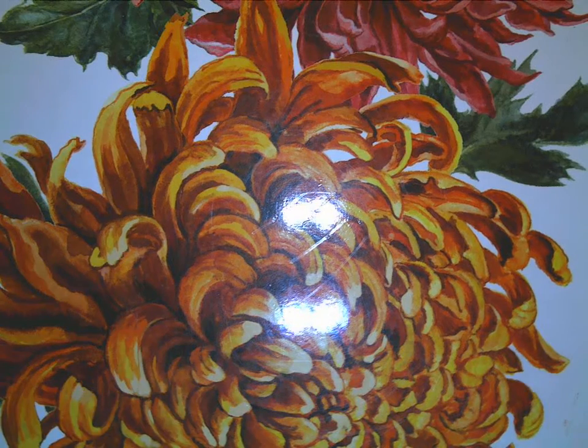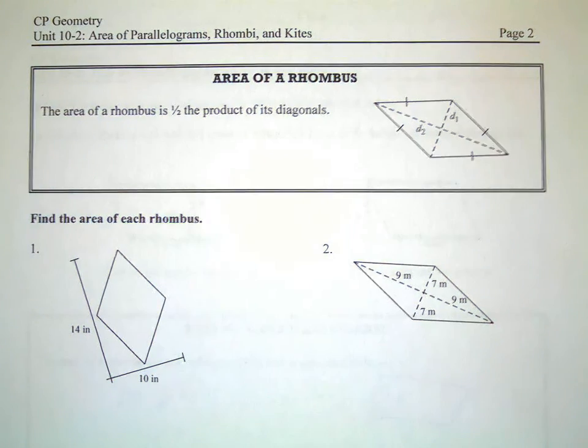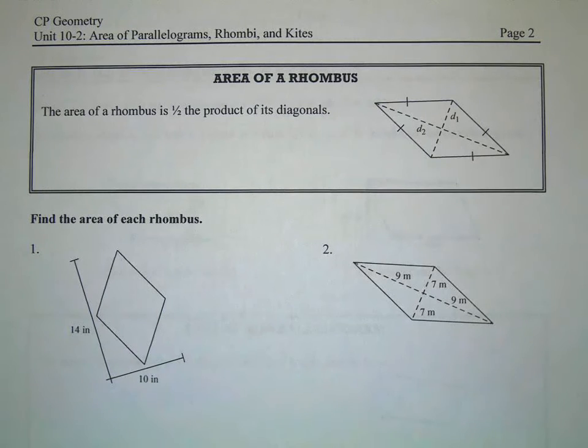Rhombi and kites, they're a little bit different, but they actually have almost the same formula. The area of a rhombus is half the product of its diagonals. Product means answer to a multiplication problem.